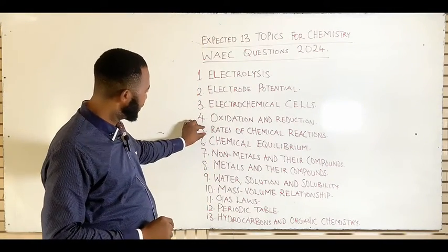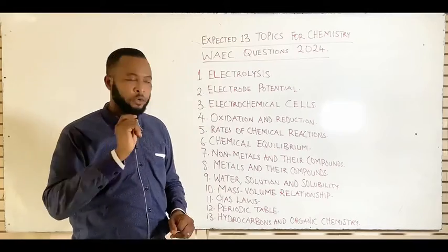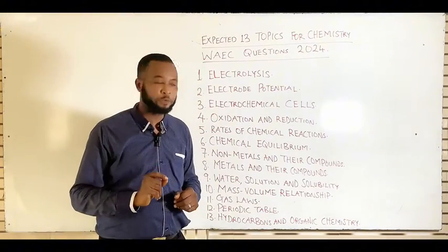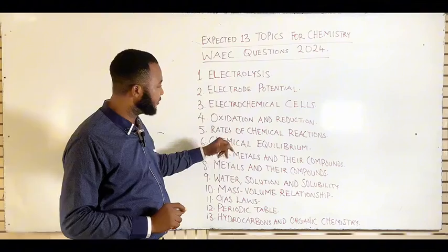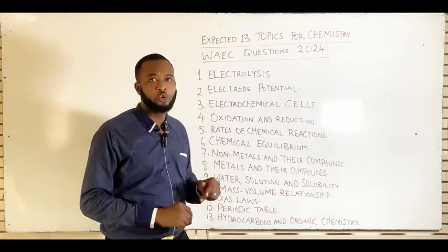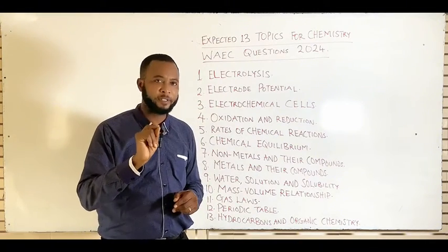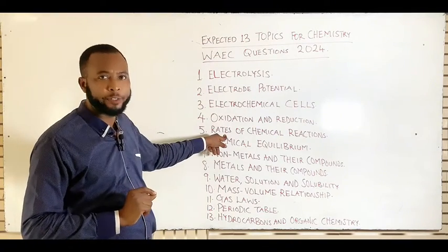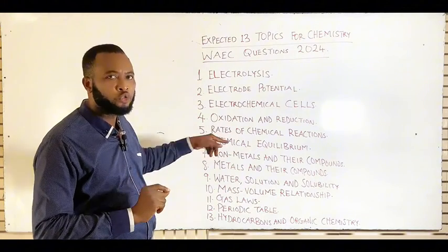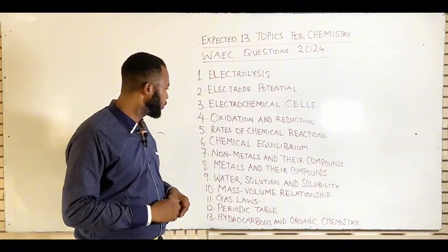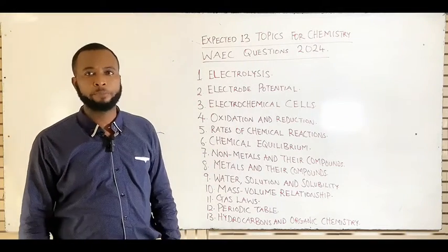The fifth expected topic is rates of chemical reactions. You need to know the definition of rates of chemical reaction, the factors that affect the rates of chemical reaction, the rate curve — which is very important — and collision theory and how to use it to explain the factors that affect the rates of chemical reaction.